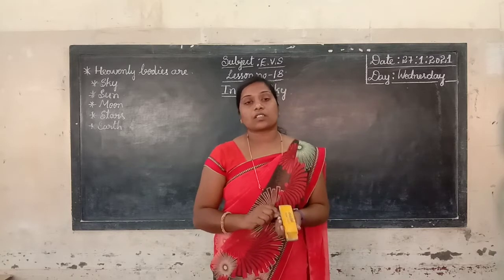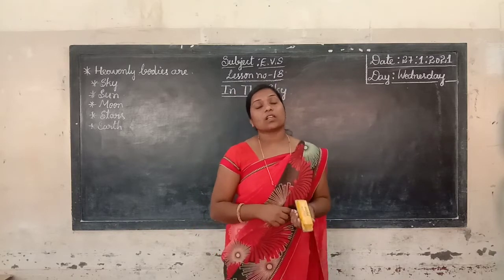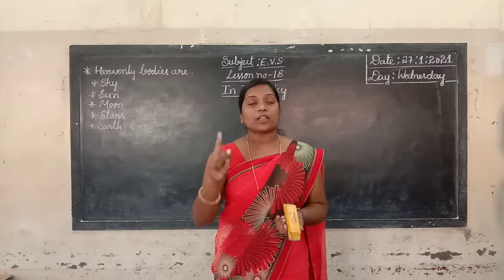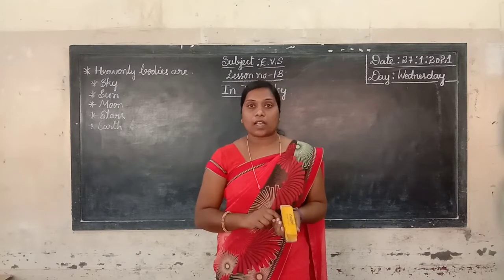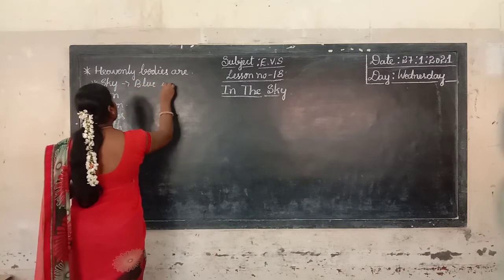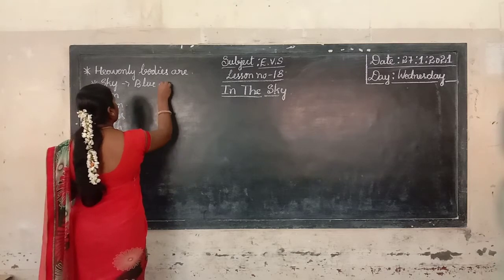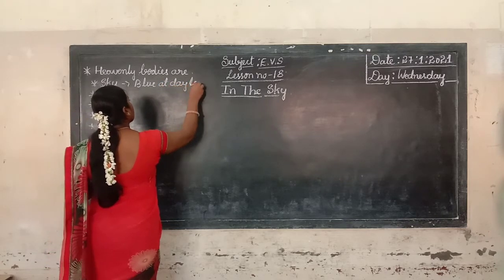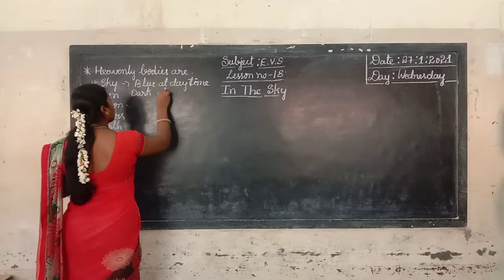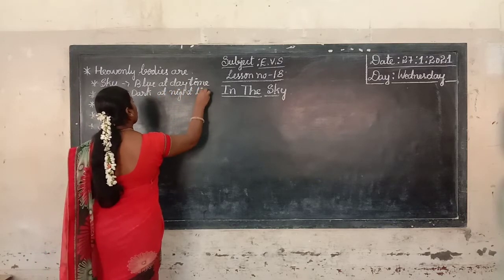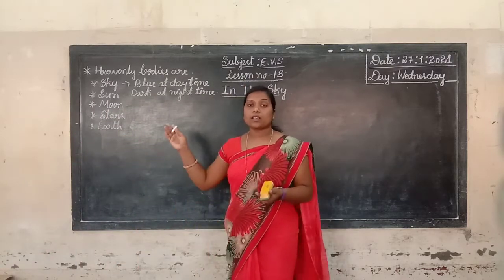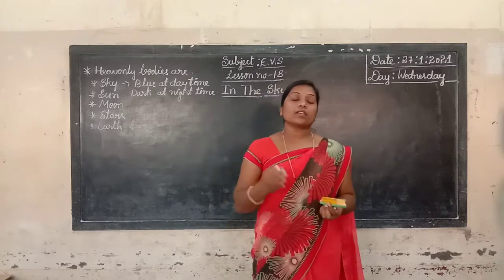So do you see the sky color? Now tell me children. Have you seen the color of the sky? How does it look? It is blue at the daytime. At the nighttime it is dark. Sky is blue at the daytime and dark at the nighttime.